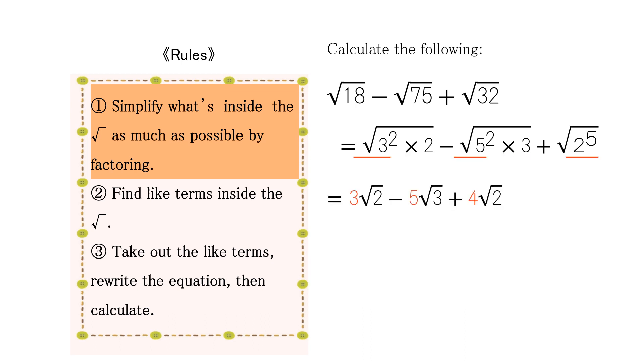The square root of 3 squared is 3. The square root of 5 squared is 5. The square root of 2 to the fourth power is 4.